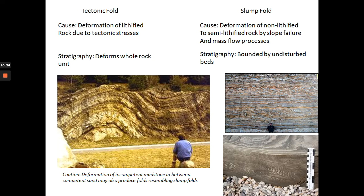It is sometimes difficult to differentiate tectonic folds from soft sediment deformation folds. Tectonic folds are caused by deformation of lithified rock due to tectonic stresses — they are regional structures affecting the whole rock unit. Slump folds are caused by deformation of non-lithified to semi-lithified rock by slope failure and mass movement. A key clue: if the folds are bounded by undisturbed, straight beds above and below, they are intraformational and likely caused by slumping, not tectonics.